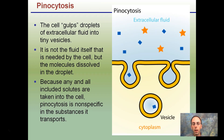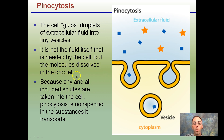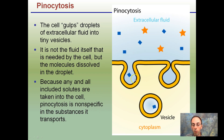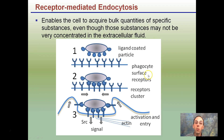Pinocytosis may look initially the same, where the membrane pinches and forms vesicles. However, with pinocytosis, think of the cell gulping droplets of extracellular fluid into the vesicles — it's a little more water and ion-containing. It's not the fluid itself that's needed by the cell, but the molecules dissolved in the droplet. Because any and all included solutes are taken into the cell, pinocytosis is nonspecific in the substances it transports — it just kind of grabs whatever is near it.